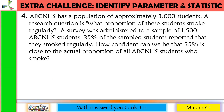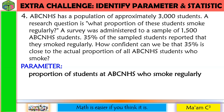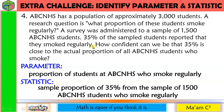Last one: ABC National High School has a population of approximately 3,000 students. The research question is: what proportion of these students smoke regularly? A survey was administered to a sample of 1,500 ABC National High School students, and 35% of the sampled students reported that they smoke regularly. The parameter is the proportion of students at ABC National High School who smoke regularly. The statistic is the 35% sample proportion from the 1,500 sampled students.